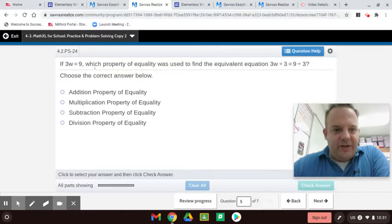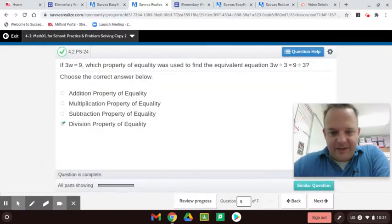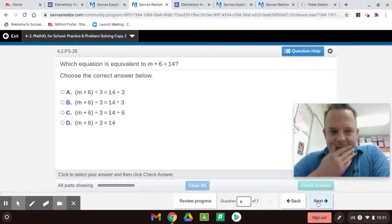If 3w equals nine, which property of equality was used to find the equivalent equation? 3w divided by three equals nine divided by three. Looks like they divide it by three on each side. What do you guys think it is? That's right, the division property of equality. Hey, you guys are getting this, aren't you? Good, it's not so bad.